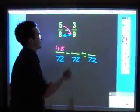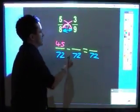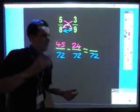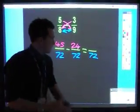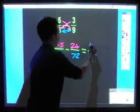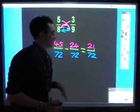So 5 times 9, 45. 3 times 8, 24. And again, some people will rush this and think, oh, it's an addition one. It's not. 45 take away 24. So we're going to end up with 21, 21 over 72.